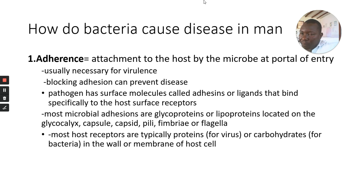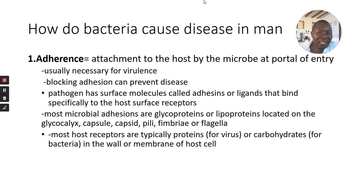How do bacteria cause disease? One is adherence — bacteria attach to the host at the portal of entry, and this is usually necessary for virulence. If they have not attached to you, they will not be able to continue multiplying within you. Blocking adhesion can be a way that the immune system can prevent colonization. The pathogen has surface molecules called adhesins or ligands that bind specifically to host cell receptors, and this is what helps the bacteria adhere to you.